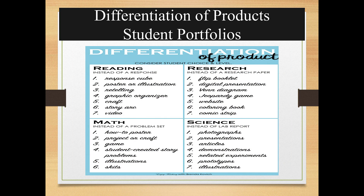Take a look at this chart. Consider student choice and level. In reading, instead of a response, you can have a response cube, poster or illustration, retelling, graphic organizer, craft, story arc, or video. In research, instead of a research paper, you can have a flip booklet, digital presentation, Venn diagram, Jeopardy game, website, coloring book, or comic strip. In math, instead of a problem set, you can have a how-to poster, project or craft, a game, student-created story problems, illustrations, or skits.